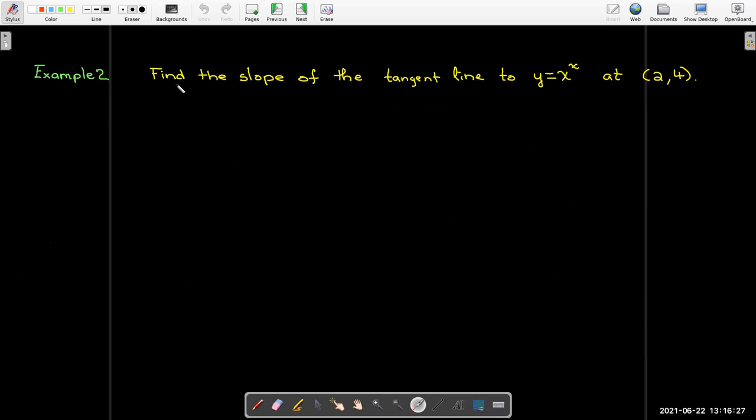So here's an example. We'd like to find the slope of the tangent line to y equals x raised to the power of x at the point.